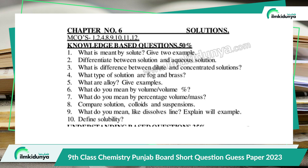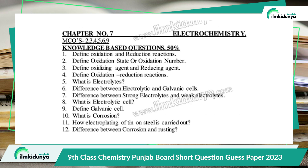Chapter 6 is Solutions. The important short questions are: What is meant by solute — give two examples. Differentiate between solution and aqueous solution. What is the difference between dilute and concentrated solution? What type of solutions are fog and brass? What are alloys — give an example. What do you mean by volume/volume percent and percent volume/mass? Compare solutions, colloids, and suspensions. What do you mean by 'like dissolves like' — explain with example. Define solubility.